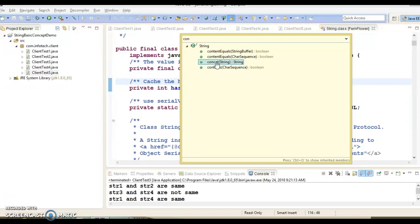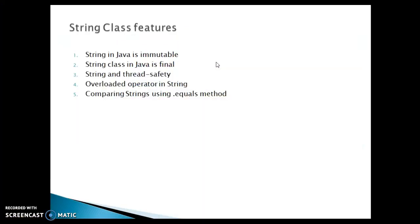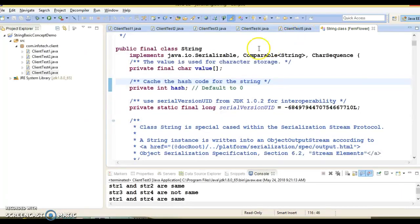I hope you understood why a string in Java is immutable. The second feature is that the string class in Java is final. If you go to the string class and look at its declaration, this class is declared as final. So whenever you perform any operation on a string which alters its content, a new string object is created containing the modified string.